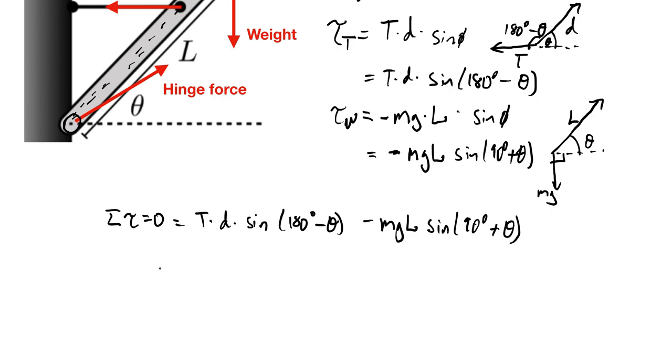Now I can go ahead and solve for the tension force. And when I do that, I get that this is equal to mgL sine of 90 degrees plus theta divided by D sine of 180 degrees minus theta. And so this is what we can calculate.